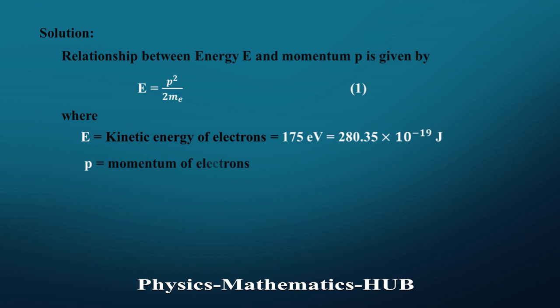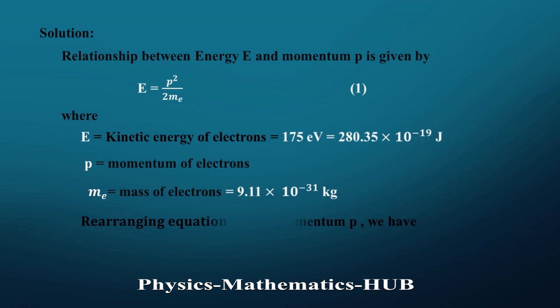p is the momentum of the electrons, and mₑ is the mass of the electron, which is equal to 9.11 × 10⁻³¹ kg. To calculate the momentum, we rearrange equation 1 and get p = √(2mₑE). Let this be equation 2.